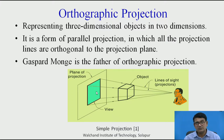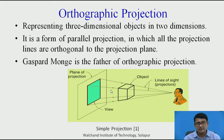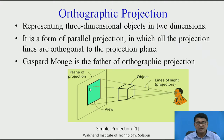That is the plane of projections, and this colored one — that shadow — is called a view. Suppose this plane is absent: the object is here, you are the observer, and the ray starts from your eyesight. It collides with that object but you will not get that image. So to get that image, you have to take an imaginary vertical plane.